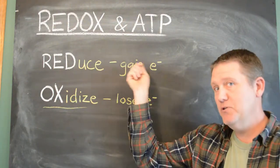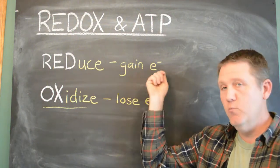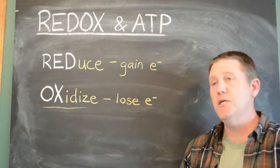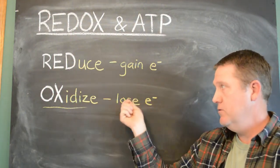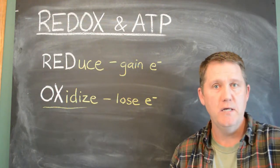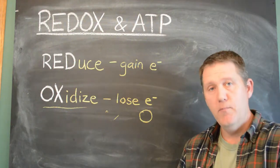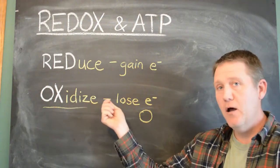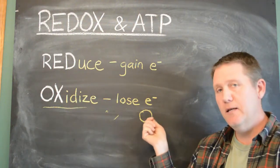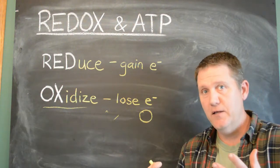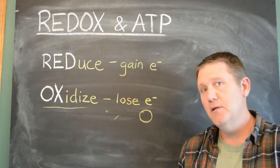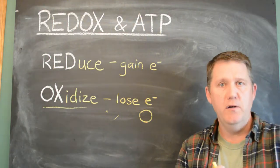So reducing, gaining electrons, it has more energy, because more of those electrons with energy in them. Oxidation, or oxidizing is losing those electrons. If you see more oxygen in a molecule, that means it's been oxidized. So typically, anything with oxygen in it, a lot of it, has less energy than a molecule with just carbon and hydrogen.